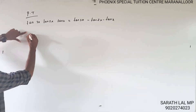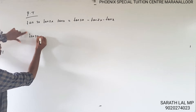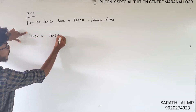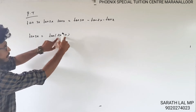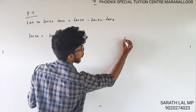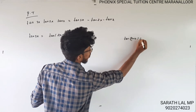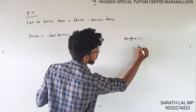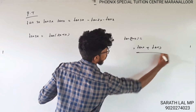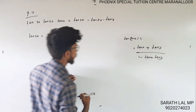Let's talk about tan3x. Tan3x is equal to tan(2x + x), because 2x plus x is 3x. Now let's apply the formula: tan(x + y) = (tanx + tany) / (1 - tanx · tany).